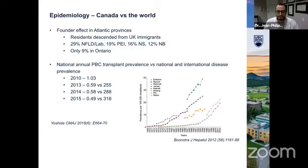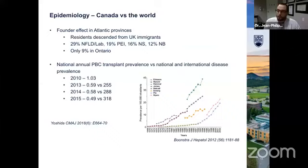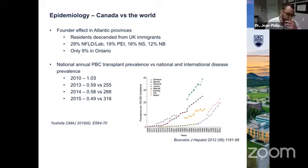Over time, not just in Canada but around the world, PBC prevalence rates rose dramatically. Canada is referenced by orange triangles towards the far right of the graph. Is this because PBC is occurring more naturally now, or because we're becoming more adept at identifying and detecting it? I think the answer is the latter — supported by data from the same paper showing that as prevalence in Canada rose year over year, the rate of transplant for PBC dropped significantly. Not only are we detecting more cases, but we're detecting them sooner, getting people on treatment sooner, and avoiding the eventual outcome of requiring transplant.